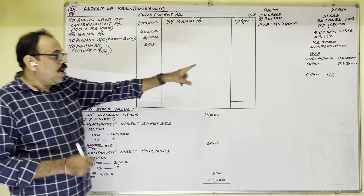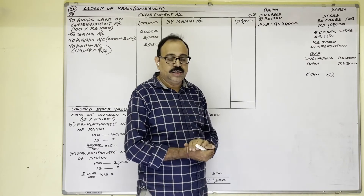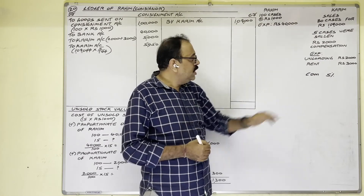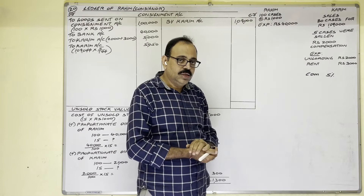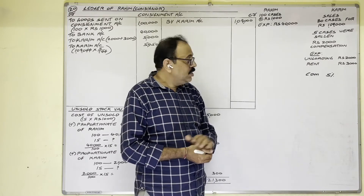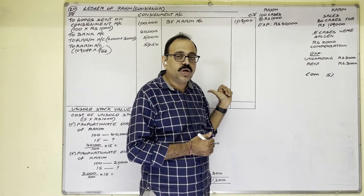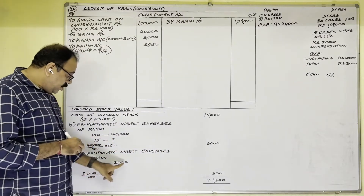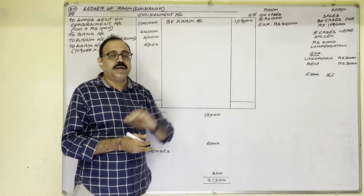Next, we add proportionate direct expenses of the consignee. Consignee paid ₹2,000 for unloading and ₹3,000 for rent. Unloading charges are direct expenses — when goods arrived, he unloaded from the vehicle to his godown once only, so this is a non-recurring (direct) expense. Rent, however, is paid every month, making it a recurring (indirect) expenditure. While calculating unsold stock value, we do not consider indirect (recurring) expenditure. So we include unloading charges but exclude rent.